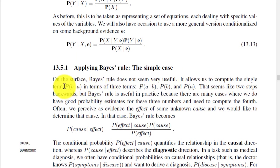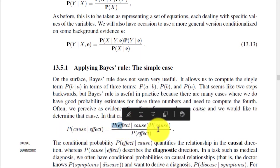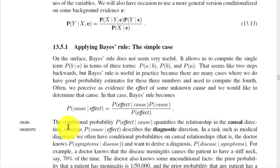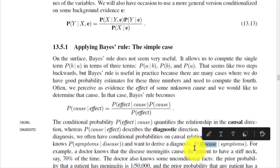However, Bayes' rule is useful in practice because there are many cases where we have good probability estimates for those three numbers and need to compute the fourth. P(cause | effect) = P(effect | cause) × P(cause) / P(effect). The conditional probability P(effect | cause) quantifies the relationship in the causal direction, whereas P(cause | effect) describes the diagnostic direction. In medical diagnosis, doctors often use conditional probabilities on causal relationships — knowing P(symptoms | disease) and wanting to derive the diagnosis P(disease | symptoms).